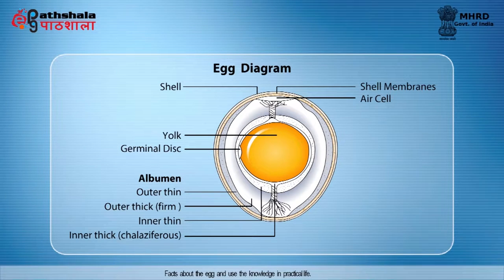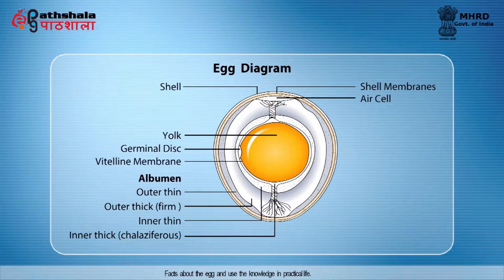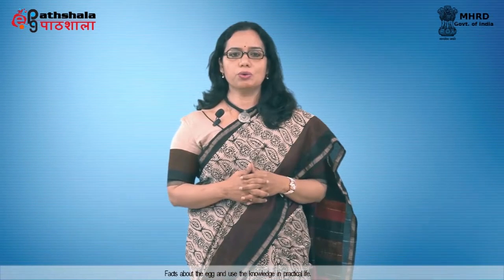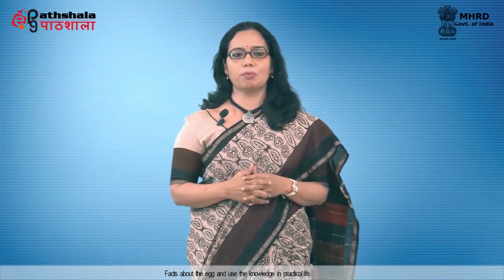The membrane which separates the yolk and albumin is called the vitelline membrane. You can also see a rope-like structure holding the yolk in the center of the egg. This structure is called the chalaza. Now you know how the egg structure is, and next we will look into the detail about the components.